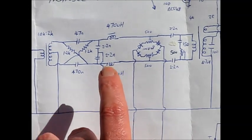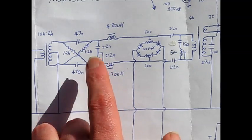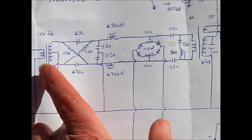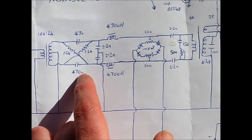On receive, it's reverse. It takes the 90 degrees out of phase signals and combines it into one signal, providing single signal reception.